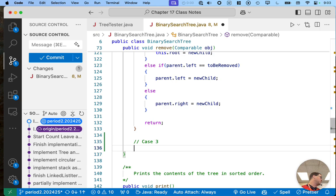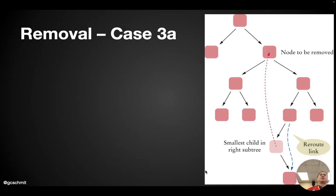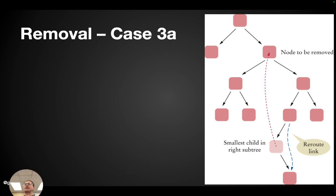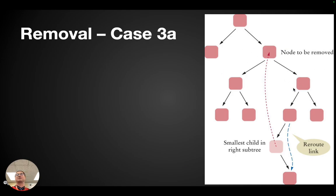Are we ready for case three? Here's case three. For case three, the diagram is a little bit more complicated. We still find the node to be removed, but now the node to be removed has two children. So we can't take the simpler approach like we took in case two and update the node to be removed's parent to simply refer to either the left or right child — because we have two children, and the right child can't refer to two different nodes.